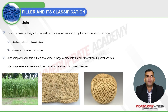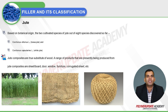The first natural fiber discussed is jute. Based on botanical origin, two of the eight discovered species are cultivated: tossa jute and white jute, as they are the most popular for use as reinforcements. Jute composites are considered a true substitute for wood, and products currently made from jute composites include sheets, boards, doors, windows, furniture, and corrugated sheets.